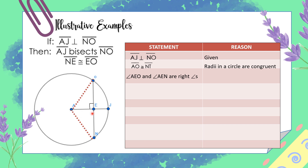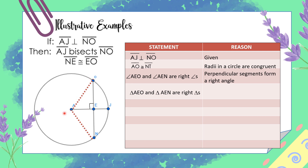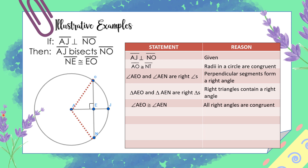Angles AEO and AEN are right angles because perpendicular segments form right angles. Triangles AEO and AEN are right triangles because right triangles contain a right angle. Angle AEO is congruent to angle AEN because all right angles are congruent. Segment AE is congruent to segment AE by the reflexive property of congruence.